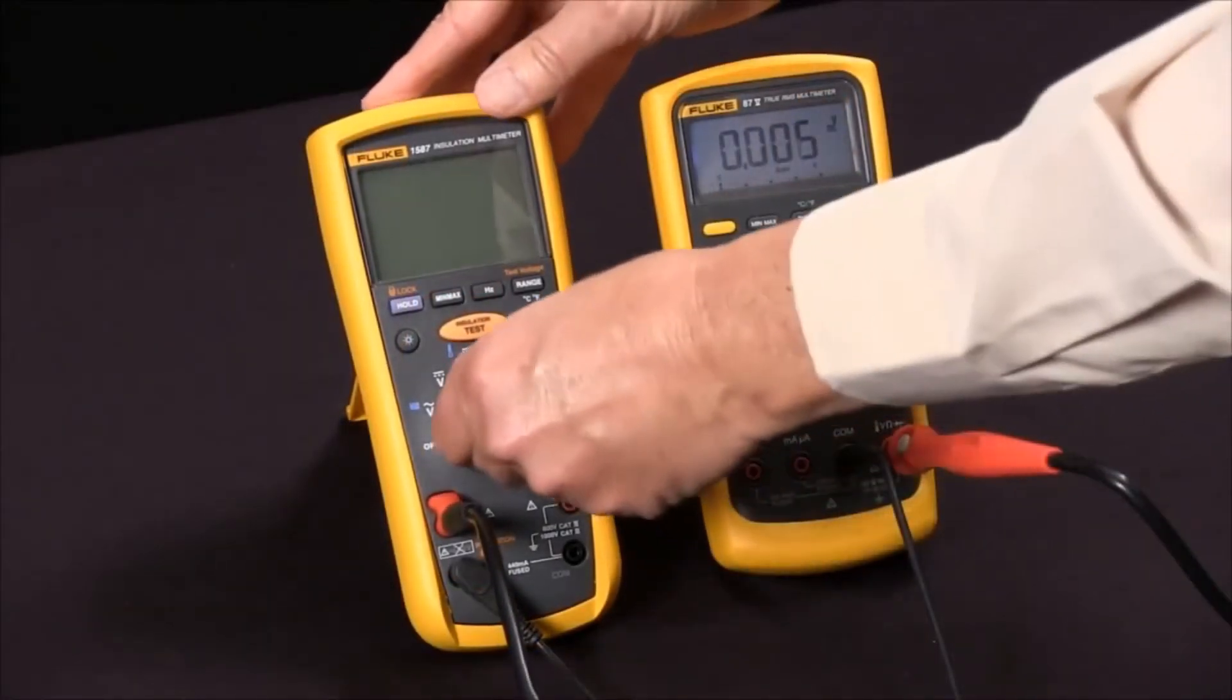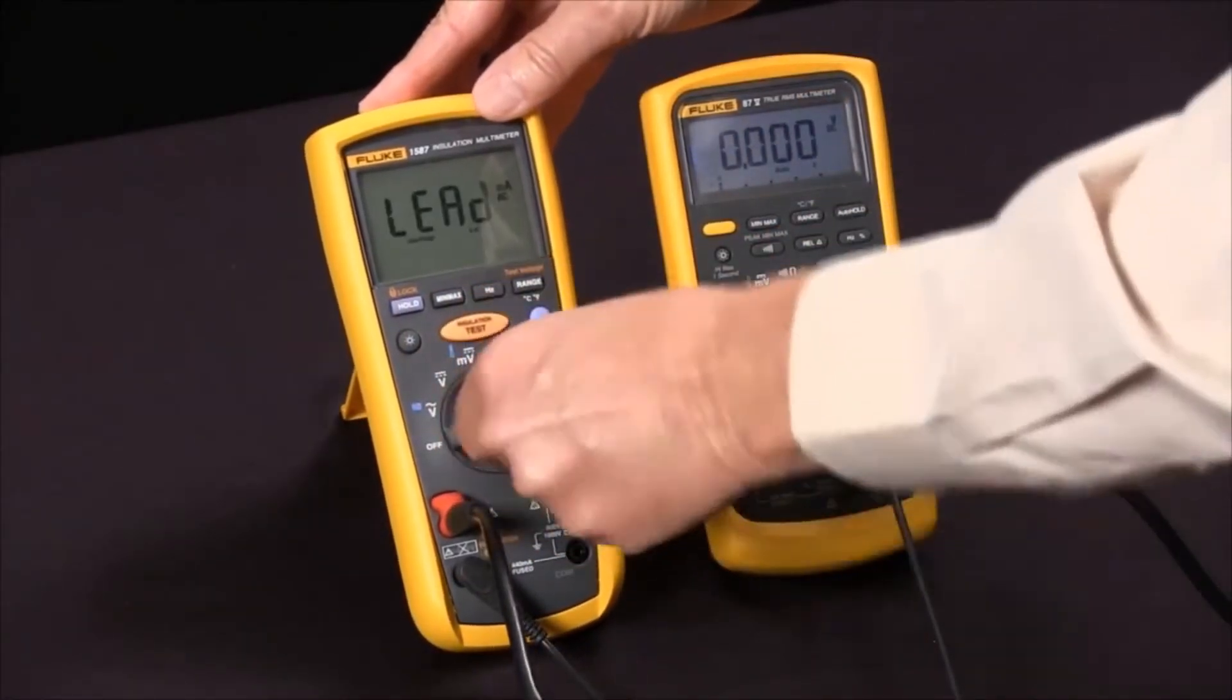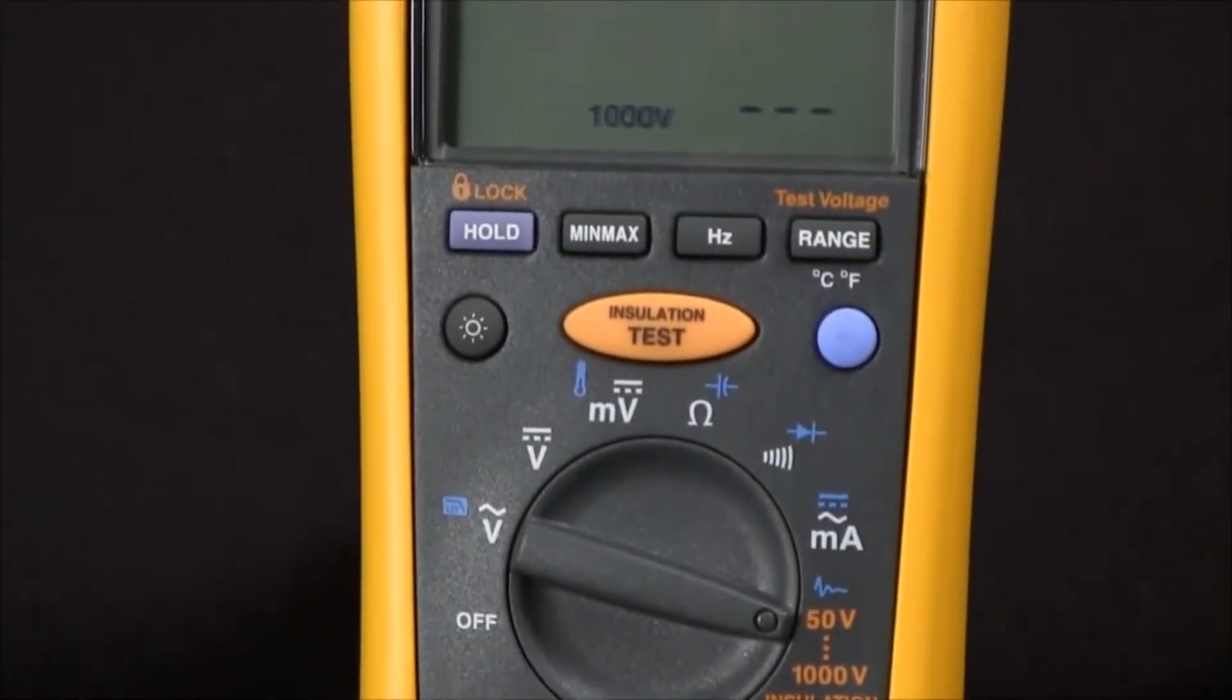And then we will rotate our selector knob to the orange insulation test voltages.